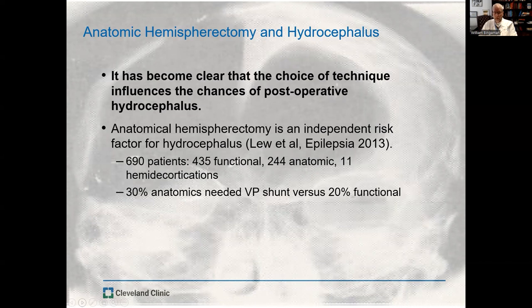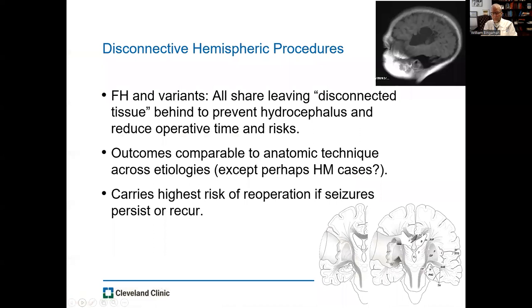The risk of disconnective hemispherectomy is that if it doesn't work, the patient may have to undergo further surgery — i.e., an anatomic hemispherectomy — to confirm that the disconnection is complete. The disconnective hemispheric procedures all share the idea of leaving disconnected tissue behind to prevent hydrocephalus and reduce operative time and risks. The literature suggests that outcomes after disconnection are as efficacious as anatomic hemispherectomy.